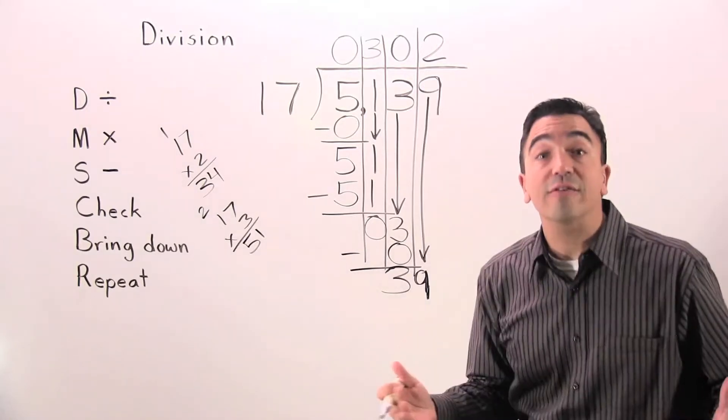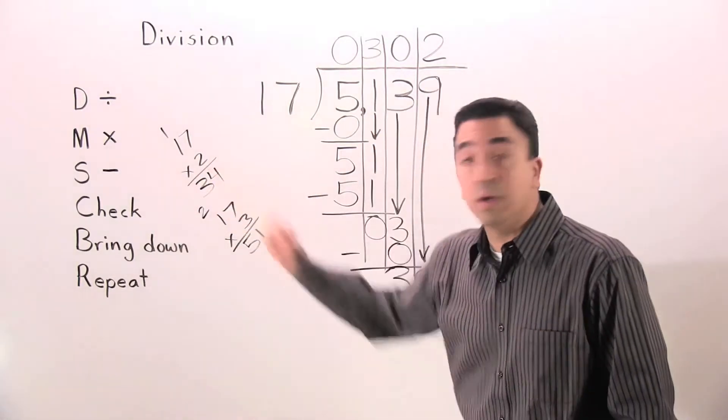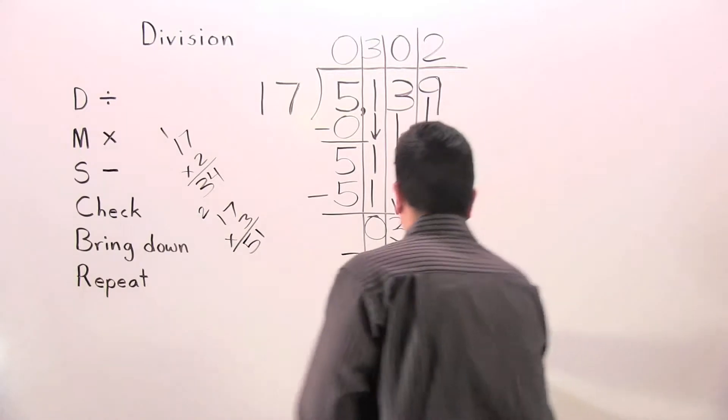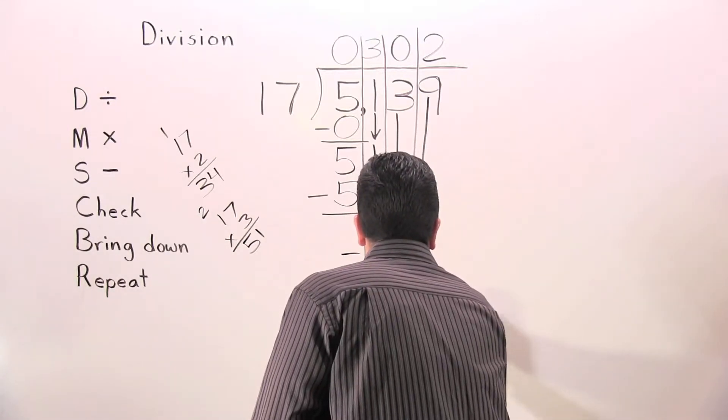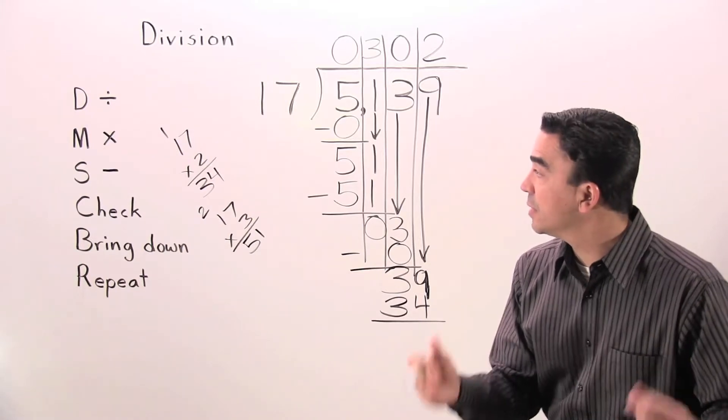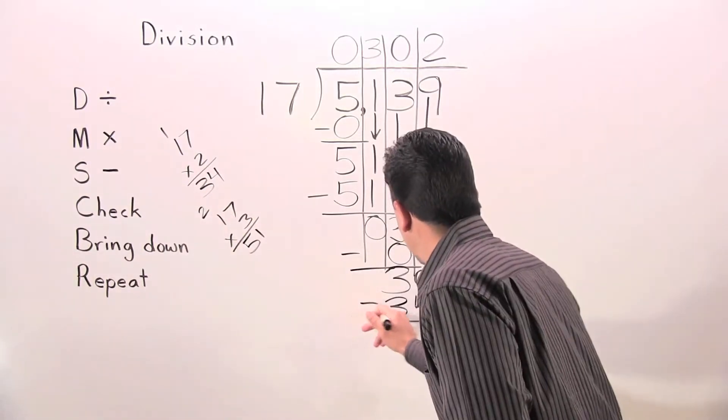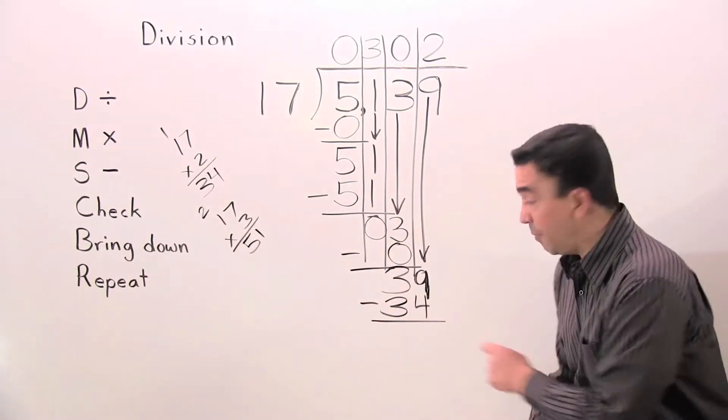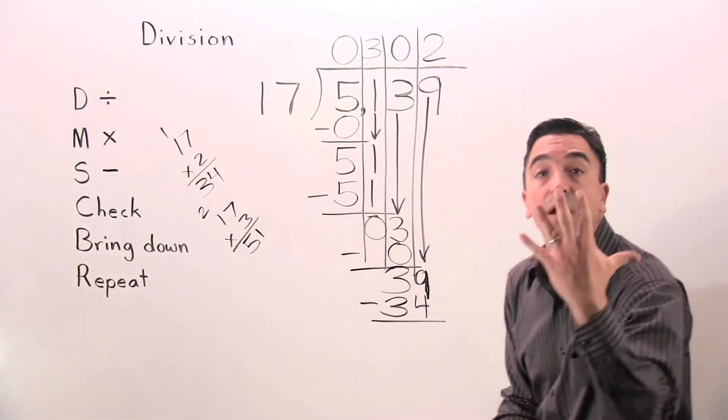All right. Next step, multiply. 17 times 2 is 34. Next step, subtract. 39 minus 34 is 5.